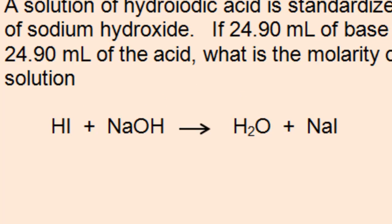First thing is make sure you have a balanced chemical equation that accurately reflects the titration. In this case, hydroiotic acid reacts with sodium hydroxide and it's a 1 to 1 ratio.